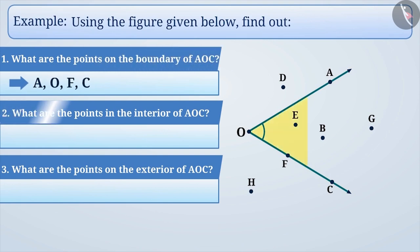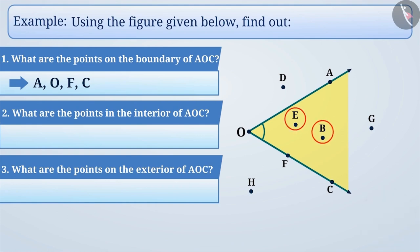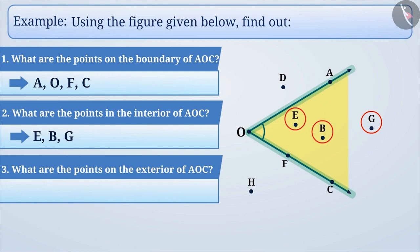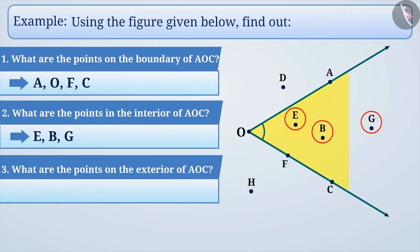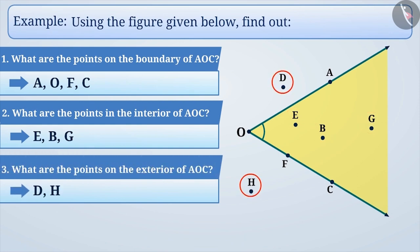Can you tell which point is in the interior of the angle? Here, point E and point B along with point G are in the interior of the angle. Because the arms or sides of the angle are made of rays, rays start from a point but have no end. We can increase the length of the rays as much as possible, so the interior of the angle also increases, which means G will also come in the interior. At the same time, point D and point H are in the exterior of the angle.